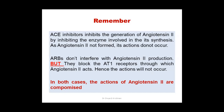ACE inhibitors prevent the production of angiotensin 2 itself by inhibiting the enzyme involved in its synthesis. ARBs do not interfere with production — they block the receptors through which angiotensin 2 acts. There can be other pathways by which angiotensin 2 is formed outside the ACE-involving pathway, so ACE inhibitors may not block all angiotensin 2. With ARBs, whatever pathway produces angiotensin 2, it cannot act because the receptor is blocked — resulting in more complete inhibition.